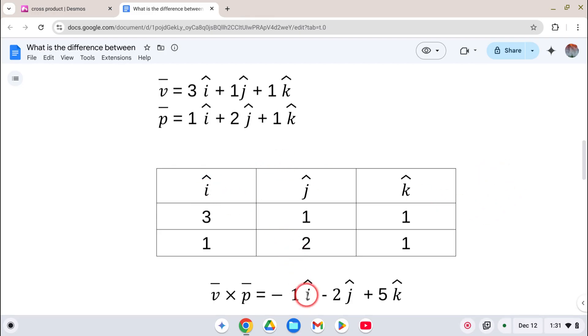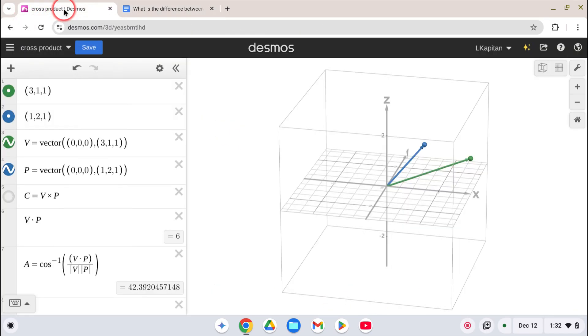So we want to first get our i-hat position. So in our mind, we cross out this column and this row, and we go 1 times 1 minus 2 times 1, which is negative 1. Then we write down a negative sign. We cross out this column and this row, and we go 3 times 1 minus 1 times 1 is minus 2. The last one, you cross out this column and this row, and you go 2 times 3 is 6, minus 1 is 5. So here is our cross product, the vector.